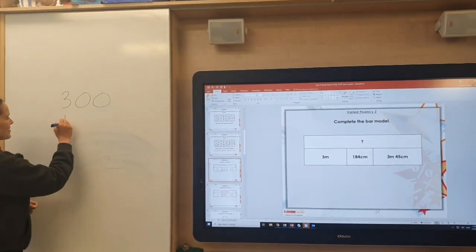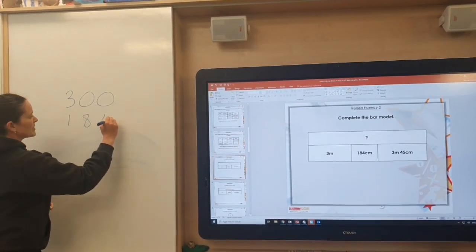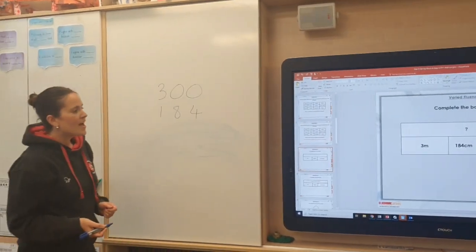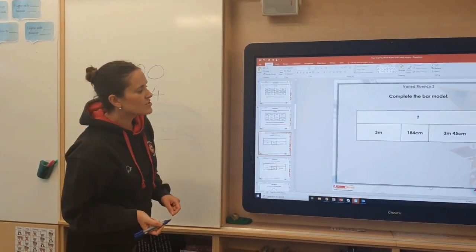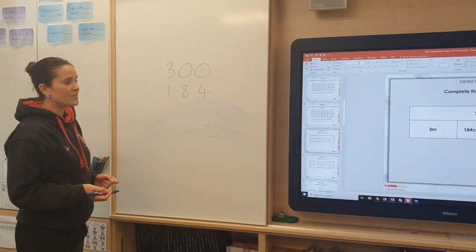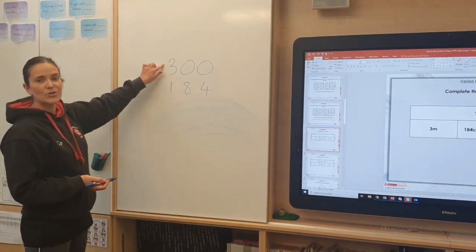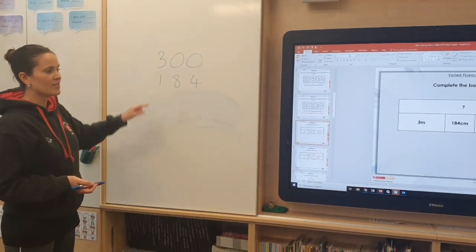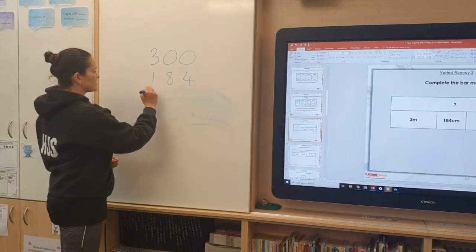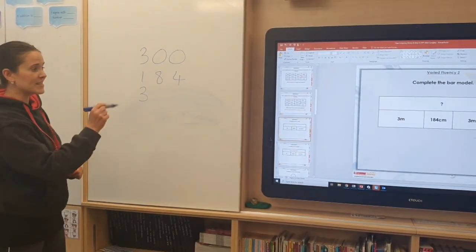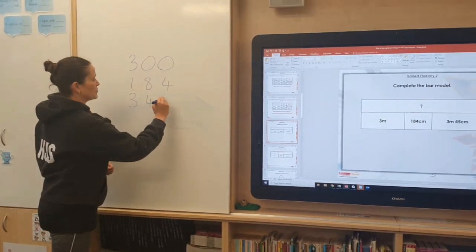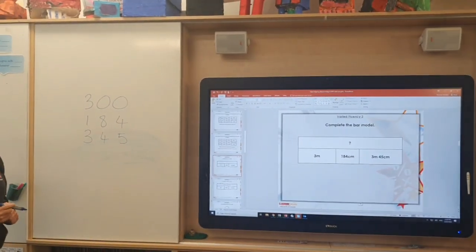The next measure, 184, I can keep that exactly the same because it is already in centimetres. And the last measurement, three metres and 45 centimetres, I will use what I know from here. So my three metres must be 300 centimetres and then I would add on my 45 like that.